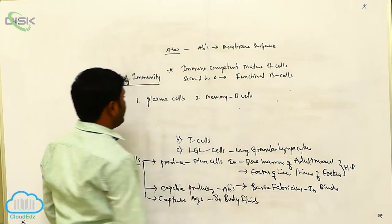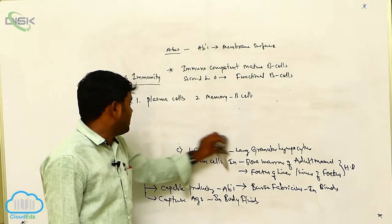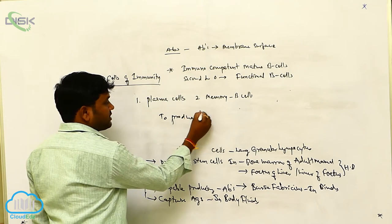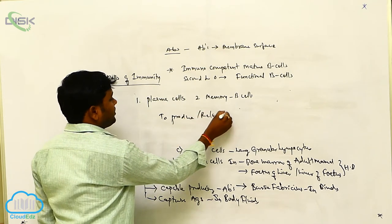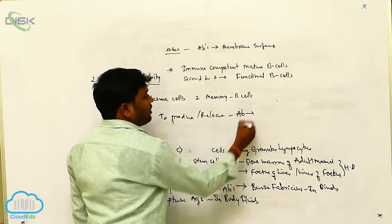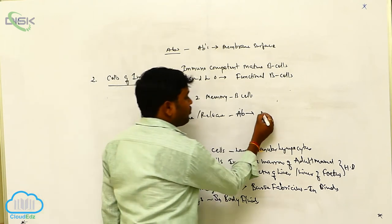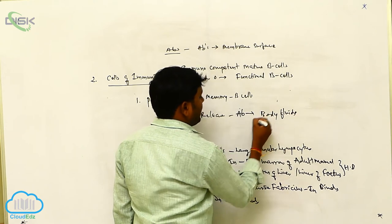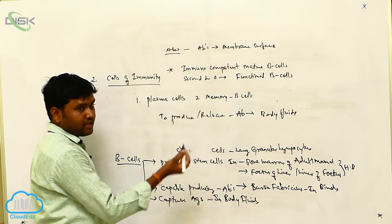The function of plasma cells is to produce and release antibodies into the body fluids.